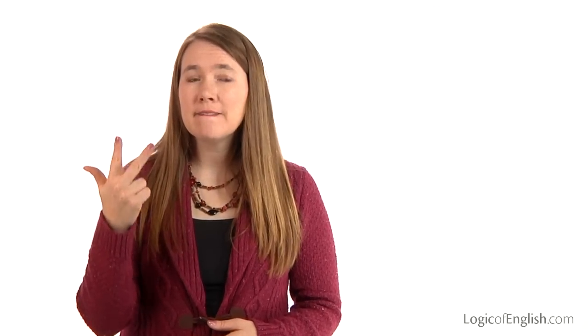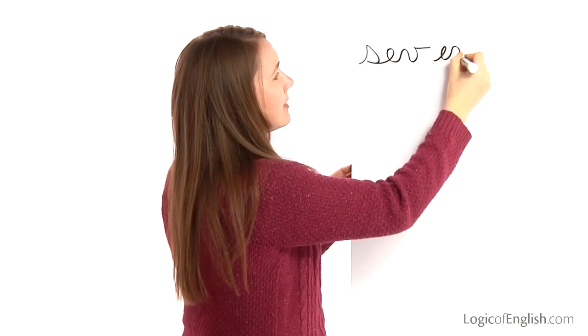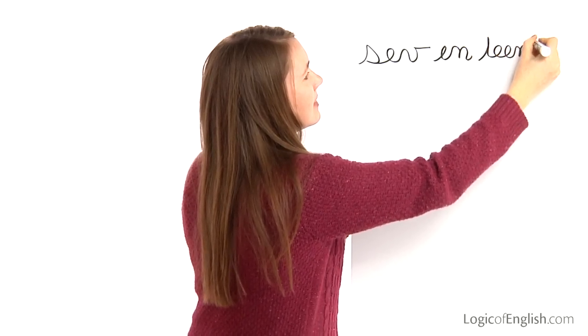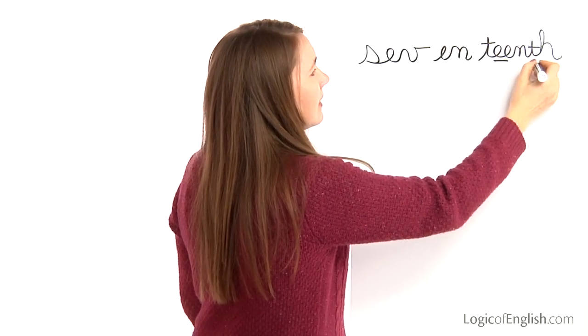The next word is seventeenth. Abby finished seventeenth in the race. How many syllables in sev-en-teenth? Three. The first syllable is sev: S, e, v. The second syllable is en: e, n. The third syllable is teenth: T, e-double-e, n, th. Go ahead and write seventeenth. S, e, v, e, n, t, ee, n, th. And how will we mark seventeenth? We'll underline the e-double-e and the th.